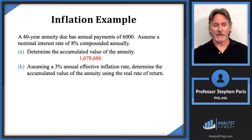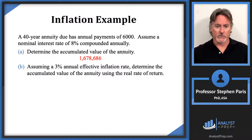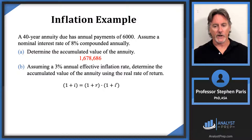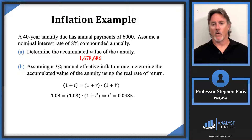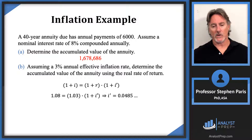For Part B, let's assume that in addition to the previous information we have a three percent annual effective inflation rate, and we want to determine the accumulated value of the annuity using the real rate of return. Instead of using the eight percent on the annuity calculation we want to use the real rate of return, so we have to calculate what that is. The relationship between the nominal rate, the inflation rate, and the real rate of return is given on the screen. Plugging in eight percent for I and three percent for R and solving for I-prime, we get four point eight five percent.